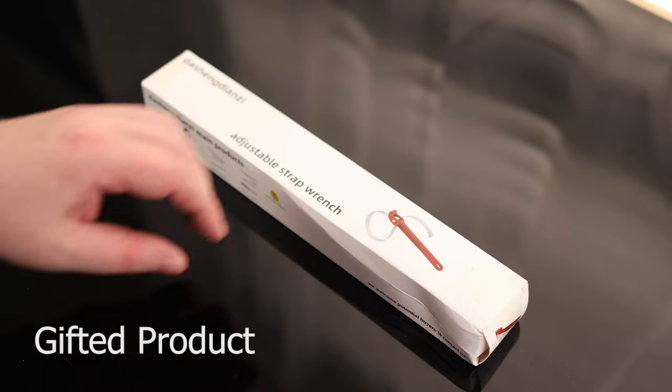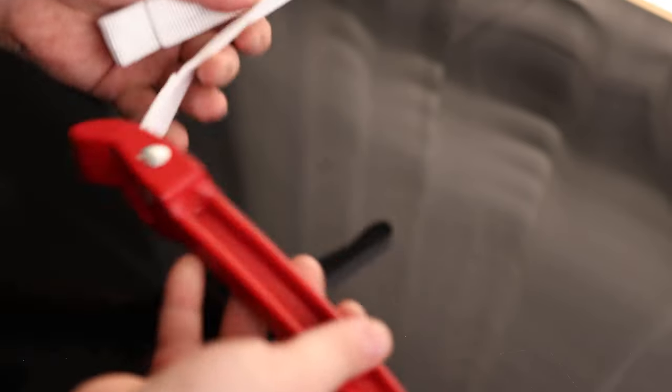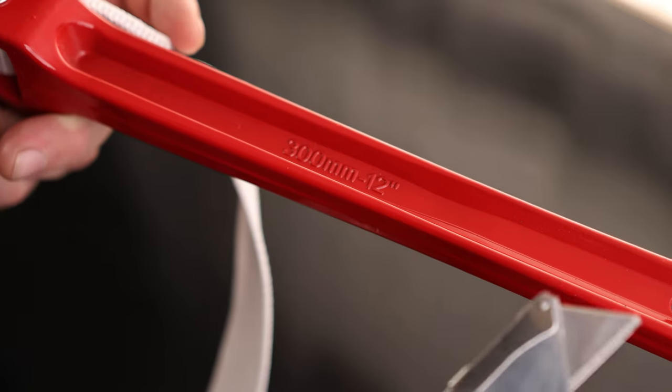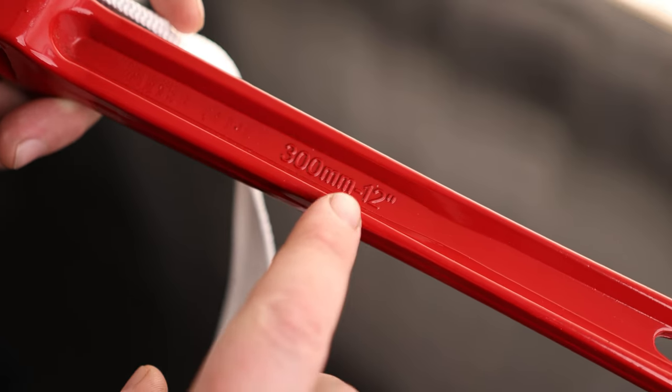Let's take a look at the adjustable strap wrench. You can see we've got a nice long handle on here, and this is all metal. It's also labeled 300 millimeters or 12 inches, so this is a one-foot handle.